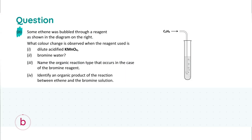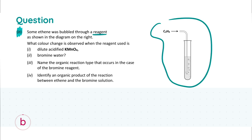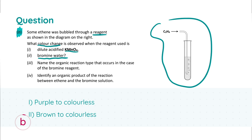Moving on to Part B, we're looking at tests that can be performed on ethane gas to verify its properties. Some ethane has been bubbled through a reagent as shown in the diagram, and we're asked about the color change observed when the reagent is acidified dilute KMnO4, and also when the reagent is bromine water. To get full marks, you need to include both the starting color and the ending color.